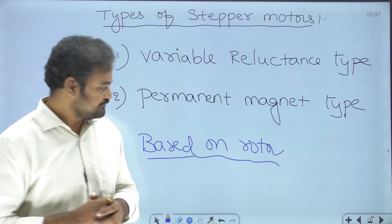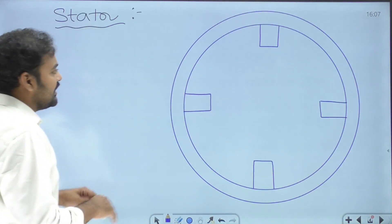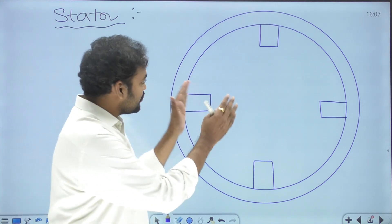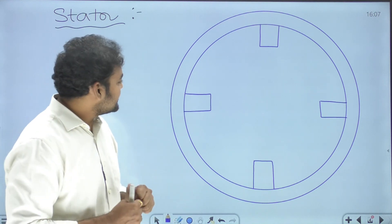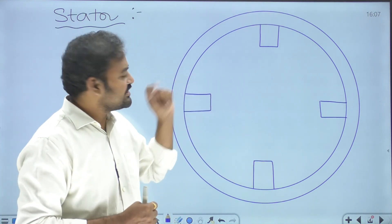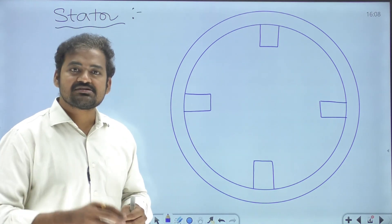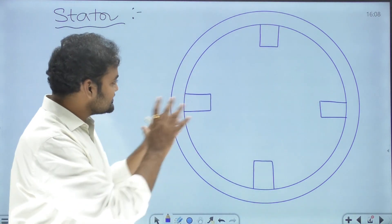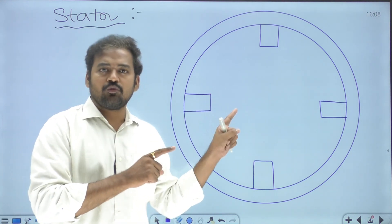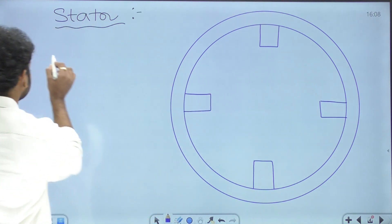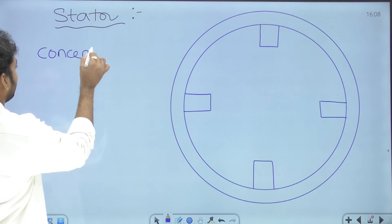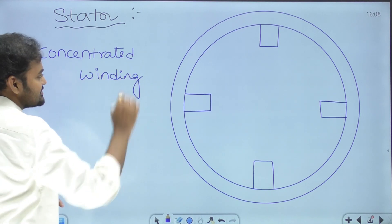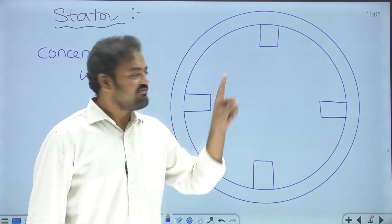Looking at the stator design, we have a cross-sectional view of the machine with four poles available on the stator. These poles are also known as salient poles or projected poles. On these four poles, concentrated winding will be provided. The stator consists of concentrated type winding.